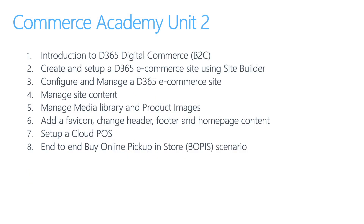In Unit 2, we will begin by giving an introduction to Dynamics 365 Digital Commerce. We will then log into the site builder tool and set up an eCommerce site. We will carry out a bunch of different site configurations to build the site. We will learn about how we can easily manage site content using various site builder content management system capabilities. We will also learn about the media library and the naming conventions around maintaining product images. We will specifically be changing the favicon, headers, footers, and homepage content to change the look and feel of the eCommerce site according to the customer's needs.